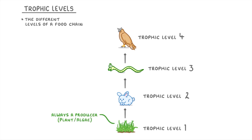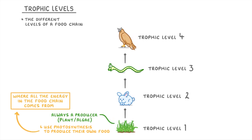The first trophic level is always a producer, like a plant or an algae. We call them producers because they are able to use photosynthesis to produce their own food using energy from sunlight, and this is where all the energy in the entire food chain comes from.